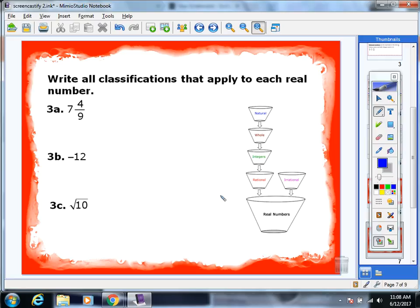Let's practice a few more. If you want to try, you can pause the video. Seven and four-ninths, crazy fractions, but it is written as a ratio. So it's going to start in rational and real. Only two classifications for this first one. Negative 12, as soon as you see the negative, I lean towards integer. So it would be integer, rational, real. You're going to have to memorize these classifications. Square root 10, that's a square root I don't know. So it would go into irrational, which also falls into real. If you notice, they're all real.